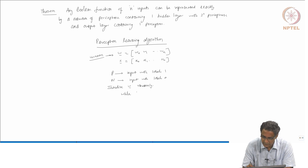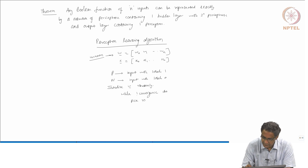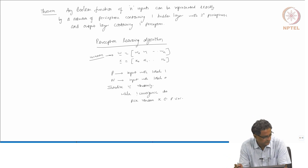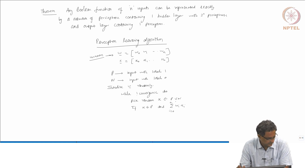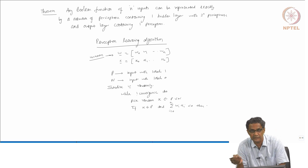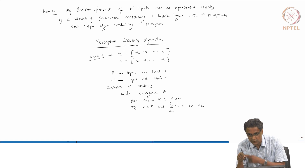While not convergence, do the following: pick a random X belonging to the set P union N — from the entire set of examples, pick one. If X belongs to P and the summation of Wi·Xi (where i goes from 0 to n, including the bias) is less than 0 — meaning it should have been greater than or equal to 0 — then for that choice of weights and this positive example X, you need to change your W.